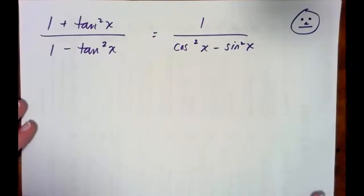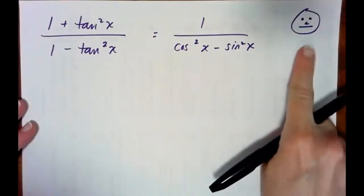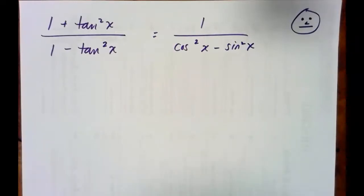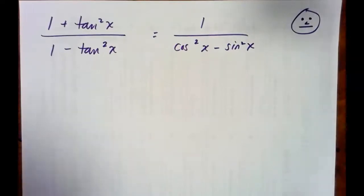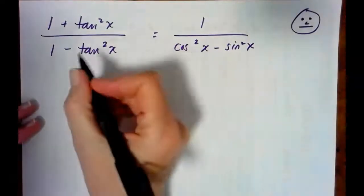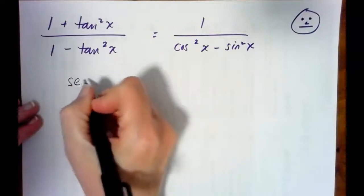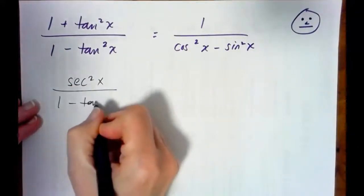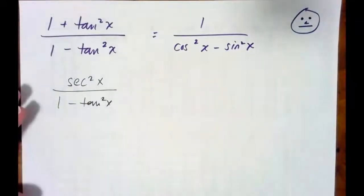Next, one that's a little bit more involved. Here we've got 1 plus tangent squared over 1 minus tangent squared. From Pythagorean identities, we know that 1 plus tangent squared equals secant squared, so we have secant squared over 1 minus tangent squared x.